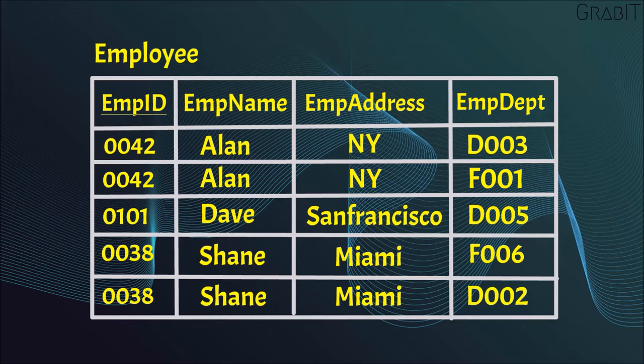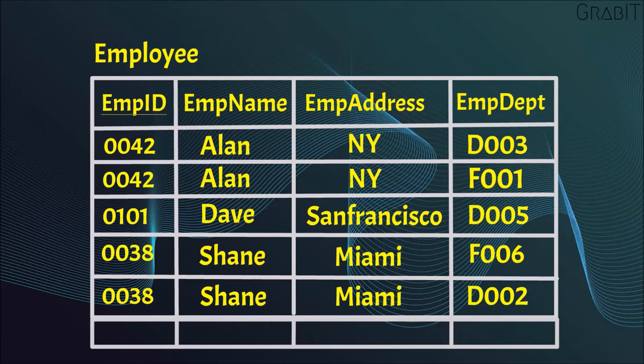Insert Anomaly: Suppose a new employee joins the company who is under training and is currently not assigned to any department. Then we would not be able to insert the data into the table if the Employee Department field doesn't allow null values.